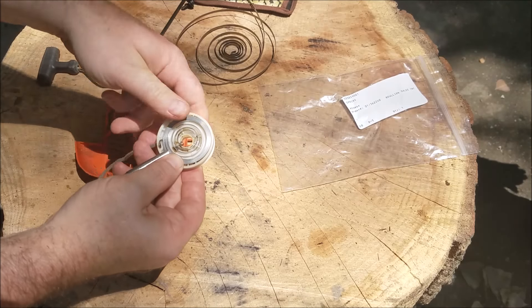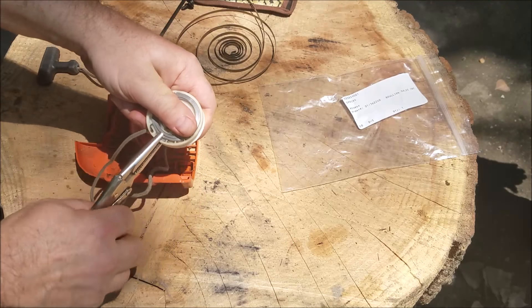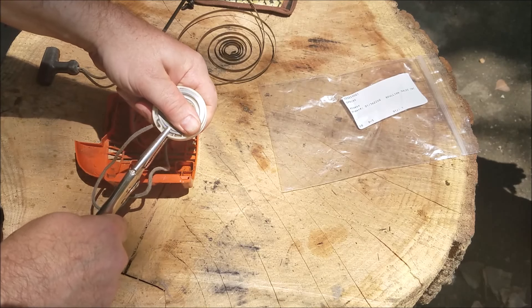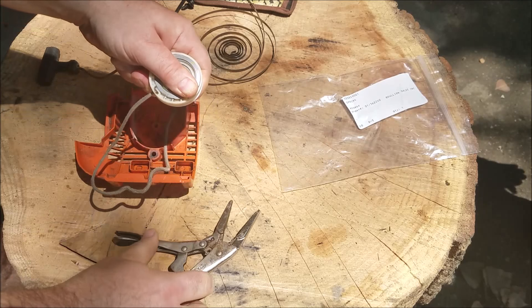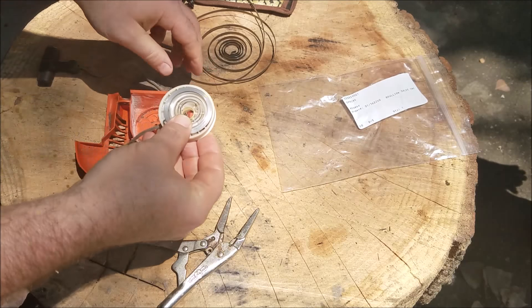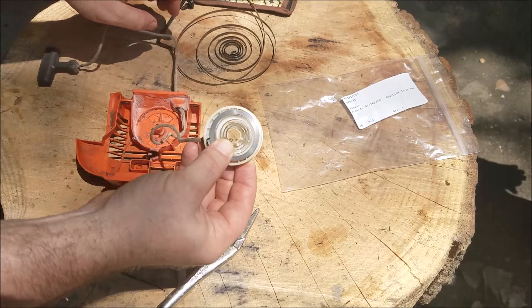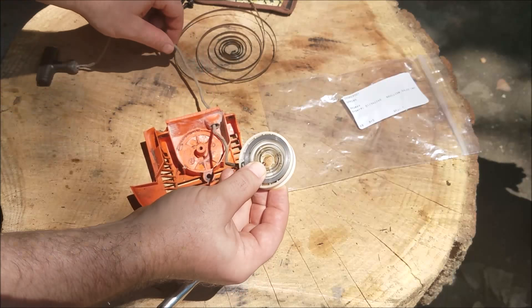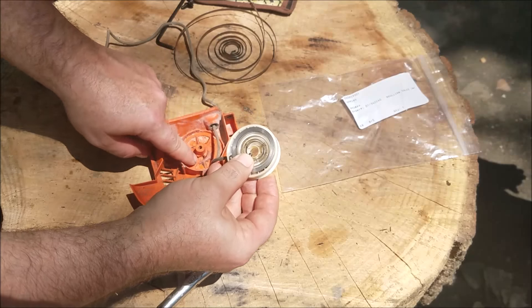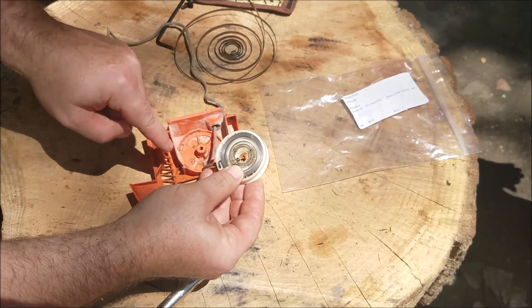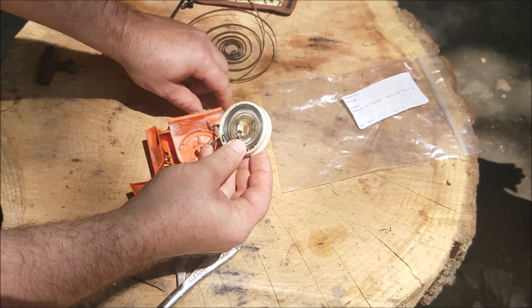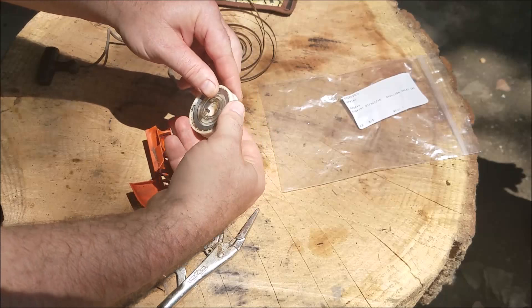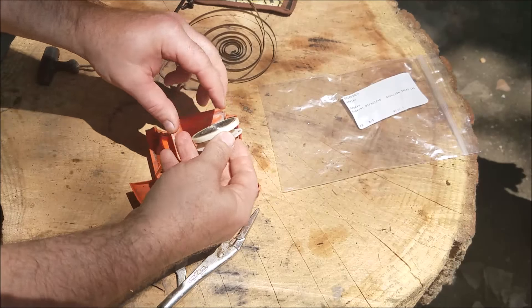So then we got the recoil spring back in there. Carefully take the vice grips off. And then this little notch has to hook into there, so you have to make sure that it's going to clear and hook in there.